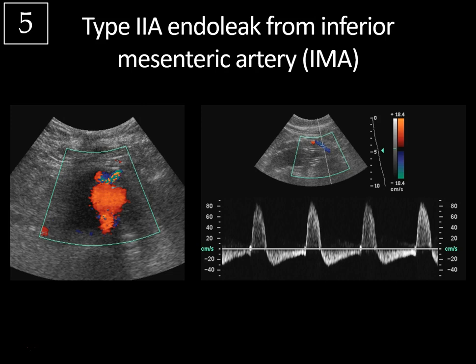If the endoleak has low pressure and the sac isn't expanding, these are typically just observed. But if the sac is expanding over time, this is usually due to a higher flow type 2 endoleak, which is treated with embolization of the artery causing collateral retrograde flow, or open surgical repair.